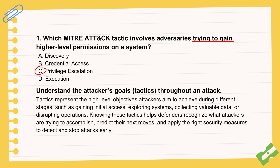The key thing is the goal. The attacker's probably already inside, maybe with basic access, but they need more power. It could be anything — access sensitive data, install something persistent, or take full control of the machine. So privilege escalation is that specific objective: get more access, get higher privileges. Leveling up their power once they're in.